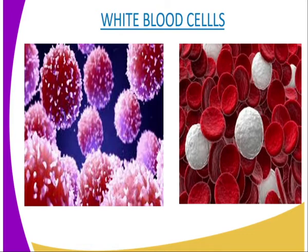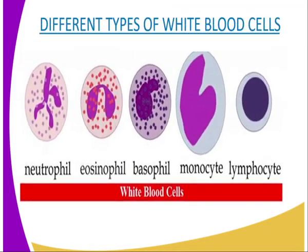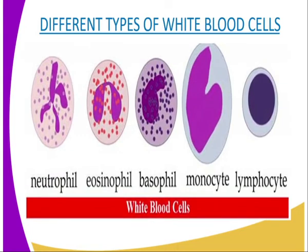The granulocytes use amoeboid movement to pass through the walls of the capillaries into the affected tissues. In the tissues and the blood, the granulocytes engulf pathogenic microorganisms by the process called phagocytosis — hence the name phagocyte. Once ingested, the microorganisms are digested and destroyed. Some white blood cells may die in the course of phagocytosis.